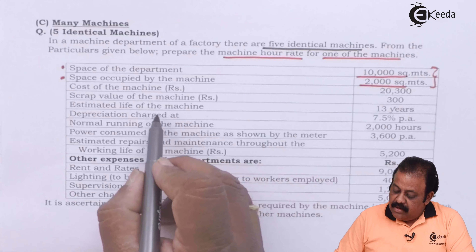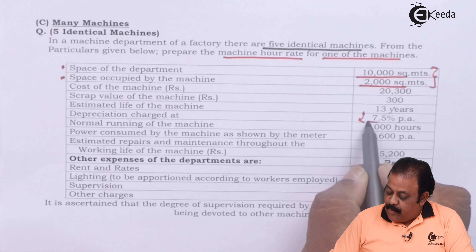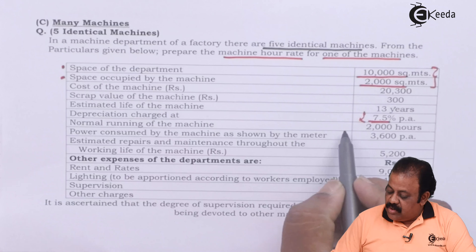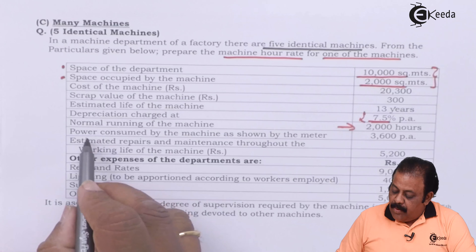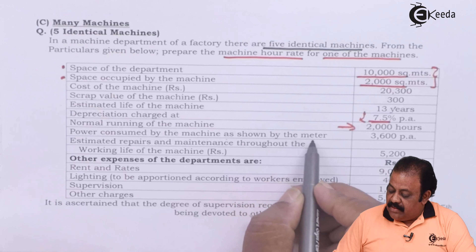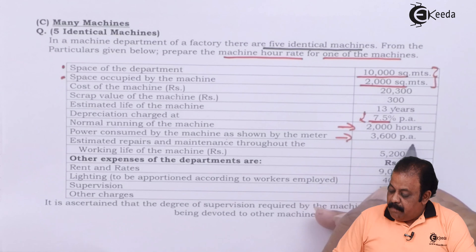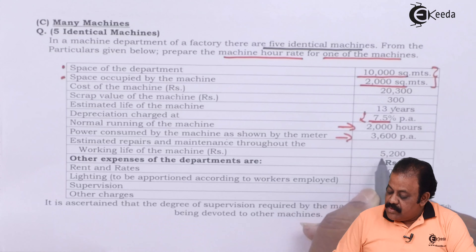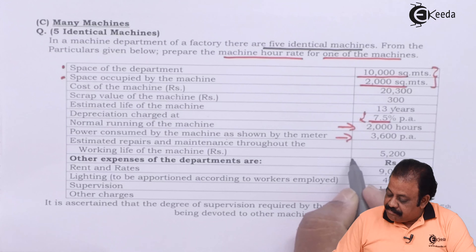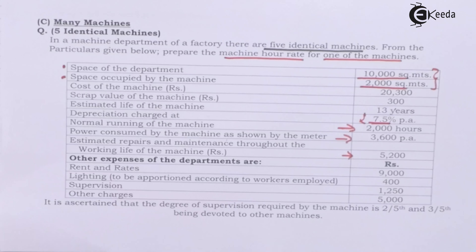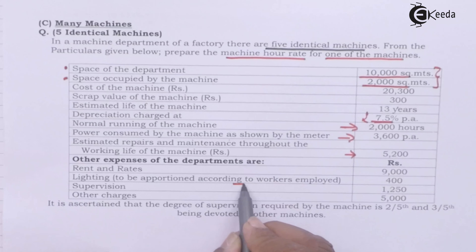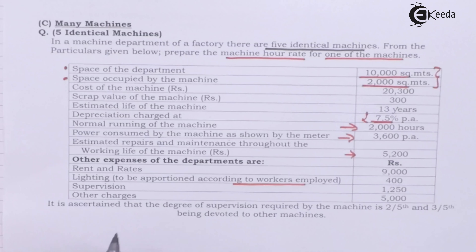Depreciation charged at 7.5% per annum. Normal running of the machine: 2,000 hours. Power consumed by the machine as shown by the meter: 3,600 per annum. Estimated repairs and maintenance throughout the working life of machine: Rs. 5,200. Other expenses of the department are: rent and rates Rs. 9,000, lighting to be apportioned according to the workers employed Rs. 400, supervision Rs. 1,250, other charges Rs. 5,000.